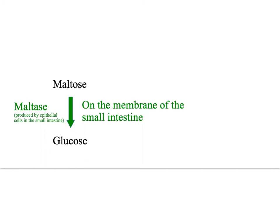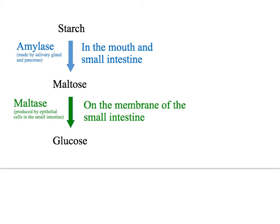Glucose is then ready to be absorbed into the blood. Here we've got an overview. Starch to maltose by amylase occurs in the mouth and the small intestine. Maltose is hydrolyzed to glucose by maltase, which occurs on the membrane of the small intestine.